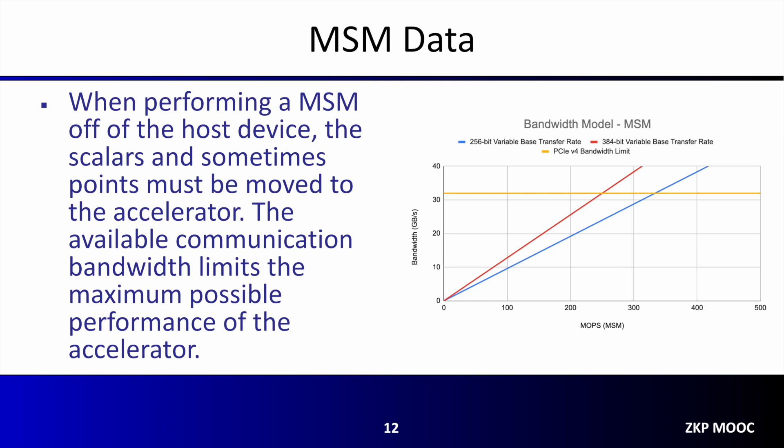Highly parallelizable operations like MSM are ripe for hardware acceleration by moving them off of a host device like a CPU onto a more parallel architecture like a GPU. However, one thing to keep in mind when moving operations off of a host device onto a peripheral is that data must also be moved to be computed on. In the case of multiscalar multiplication, the scalars — and sometimes the points as well — must be moved off of the host and onto the accelerator. The available communication bandwidth between these two devices will often limit the maximum possible performance of the accelerator.